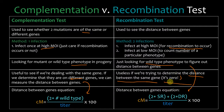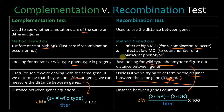Why would you use a complementation test? It's useful to see if we're dealing with the same gene, and if we determine they're on different genes, then we can measure the distance between them using this equation. The distance equation for a complementation test is: two times the number of wild type over the titer times one hundred. For a recombination test it's: two times single recombinants plus two times double recombinants over the titer.